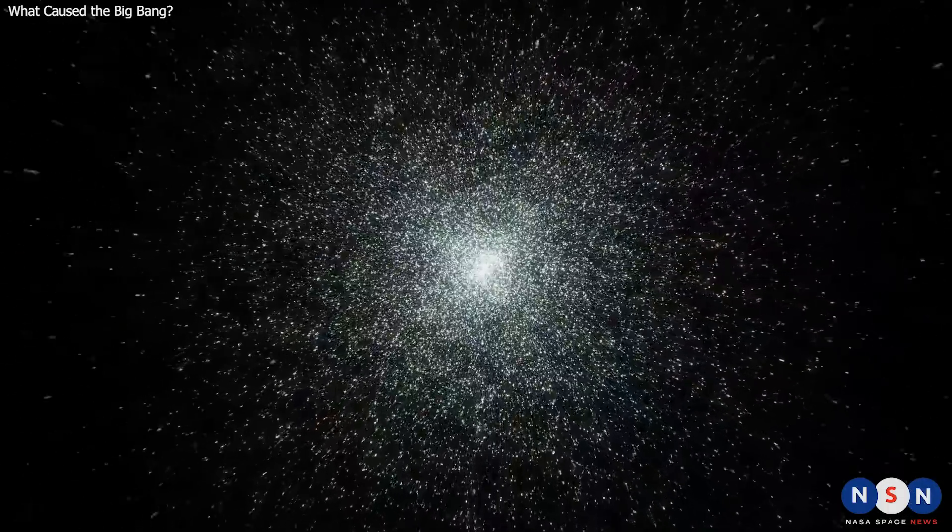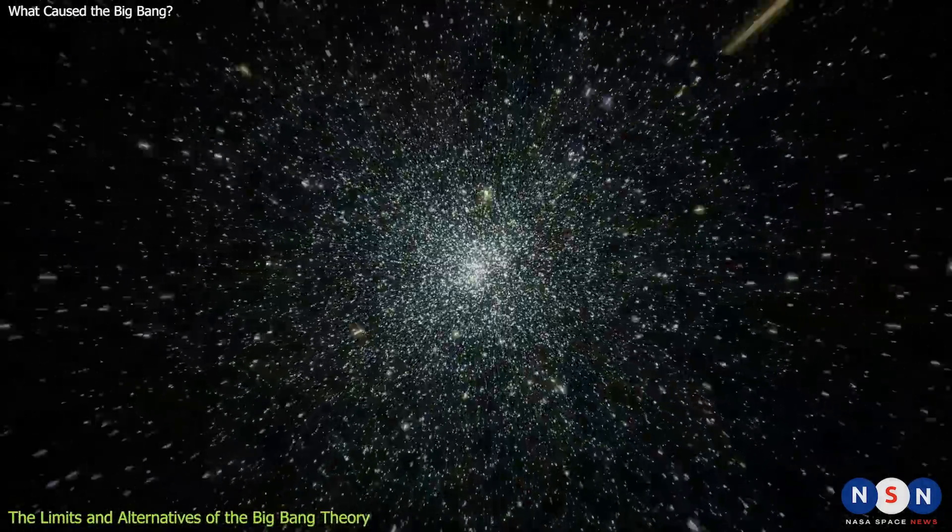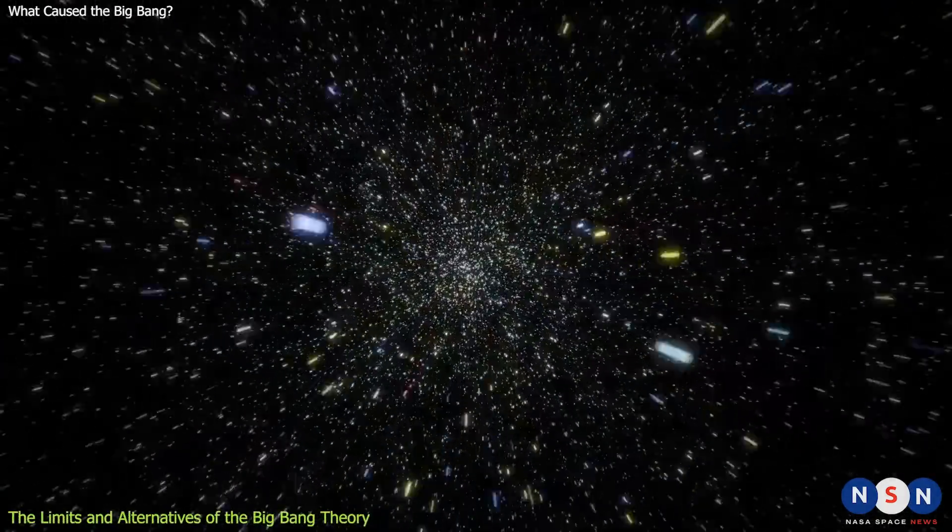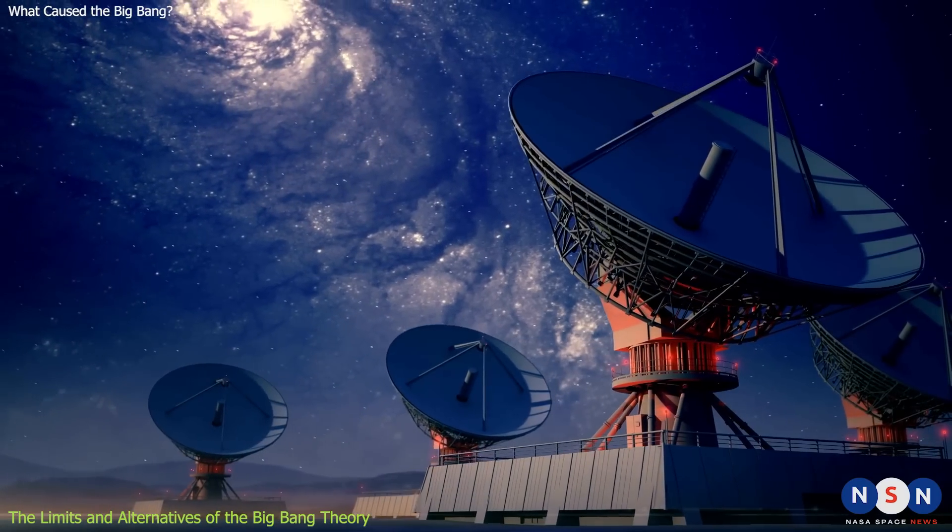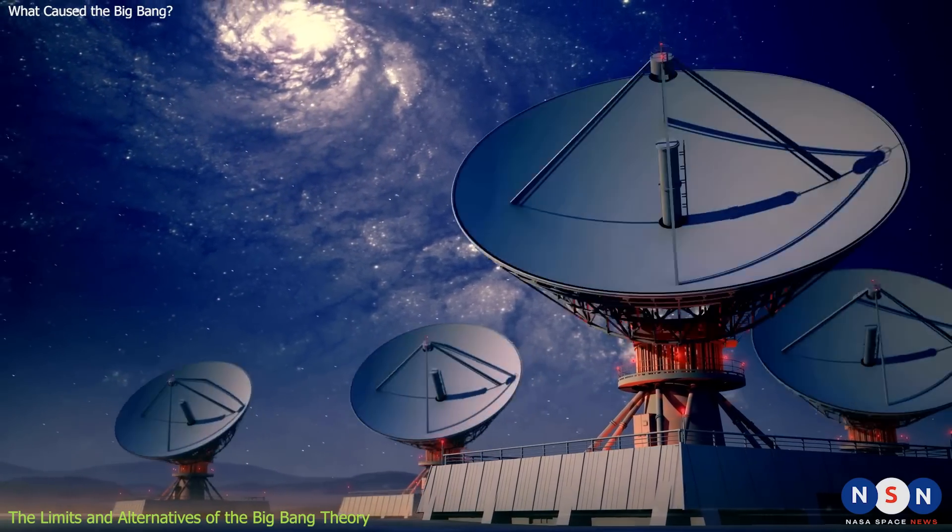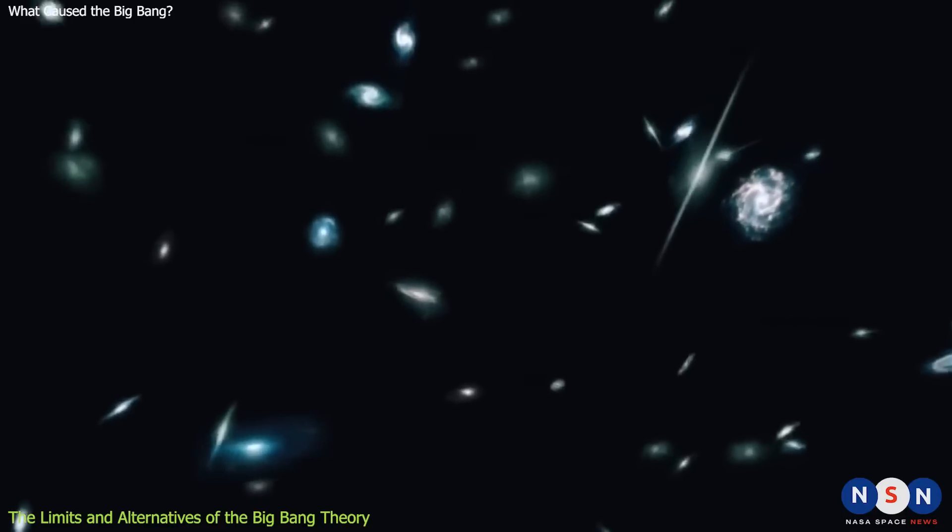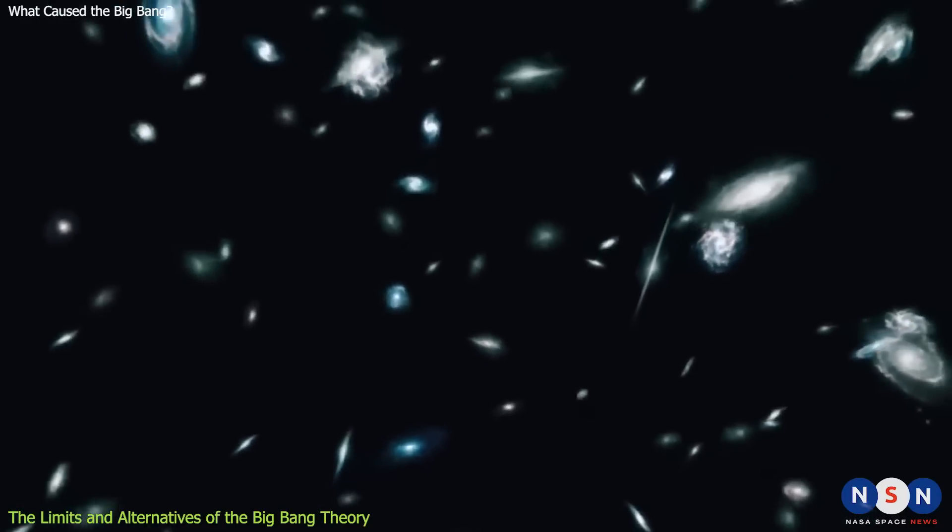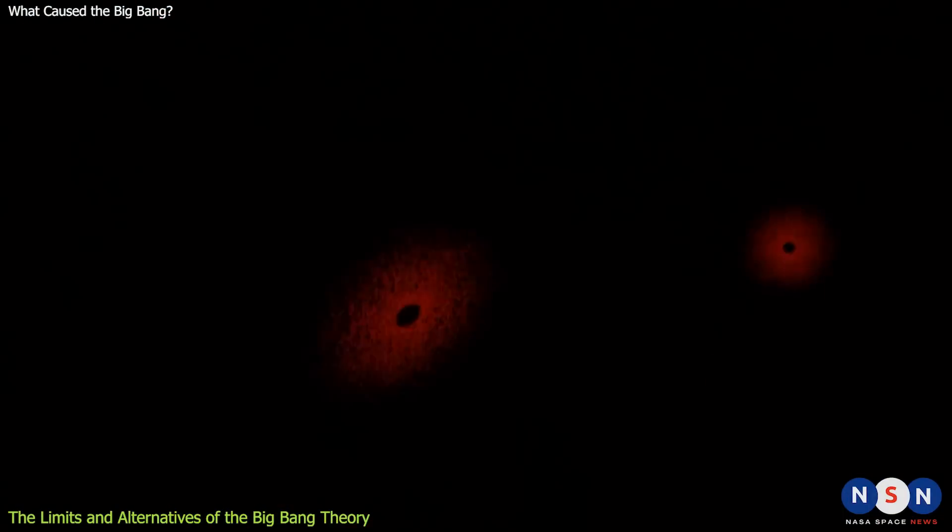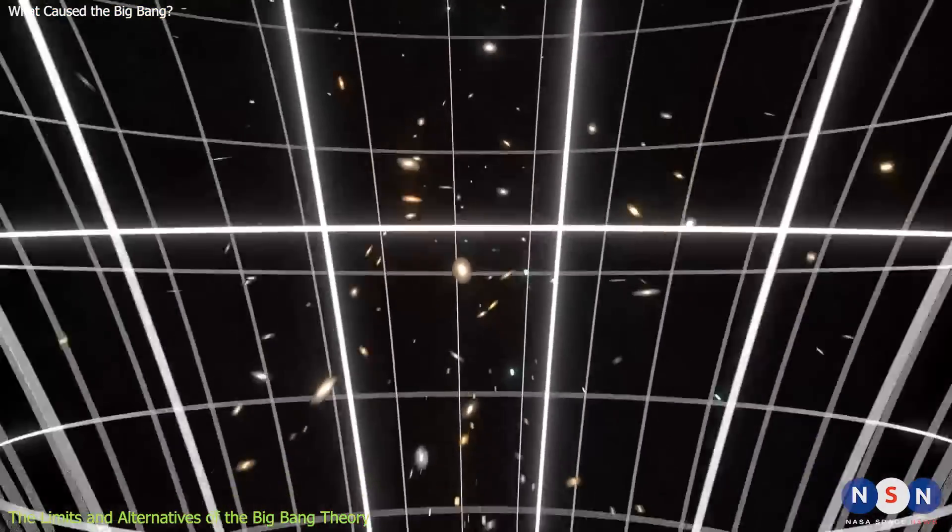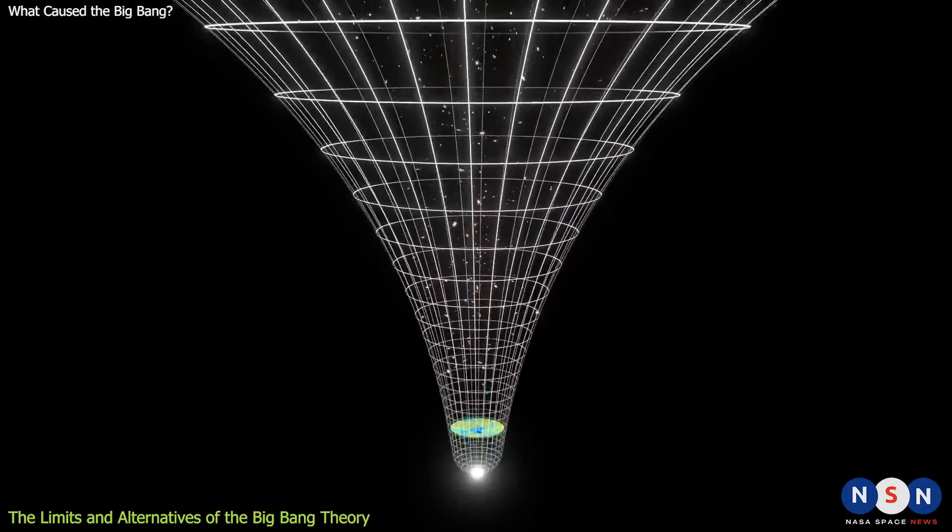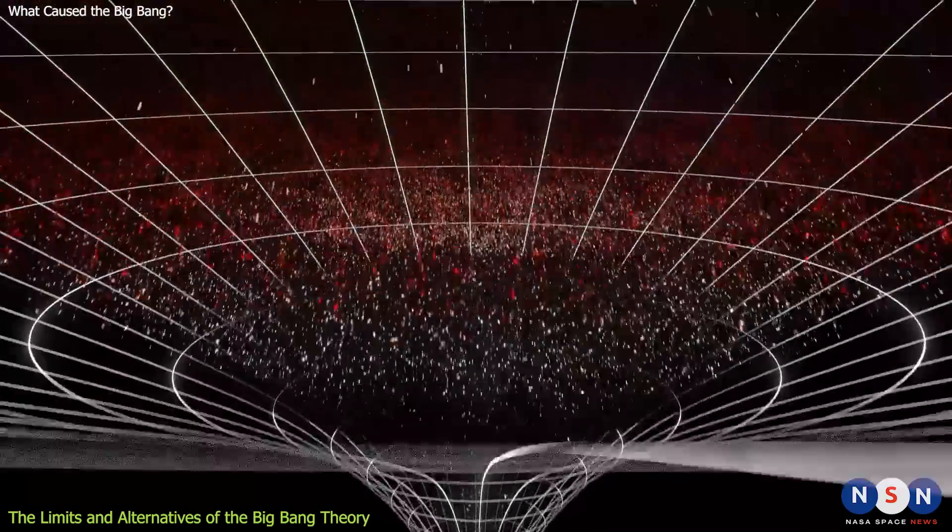The Big Bang Theory is the best model we have to describe the origin and evolution of our universe. It is based on a wealth of observational and experimental evidence, such as the cosmic microwave background radiation, the expansion of space, the abundance of light elements, and the large-scale structure of matter. It tells us that our universe began as a hot, dense, and tiny point of energy that rapidly expanded and cooled down, creating space, time, matter, and radiation.